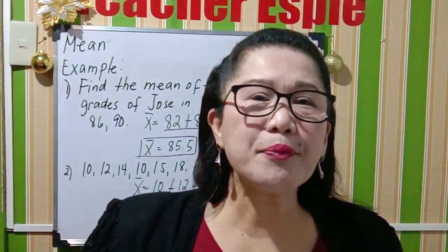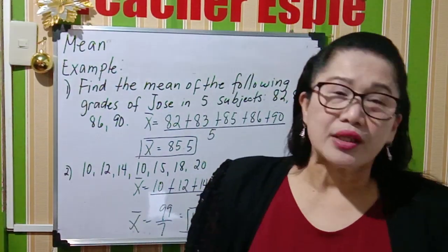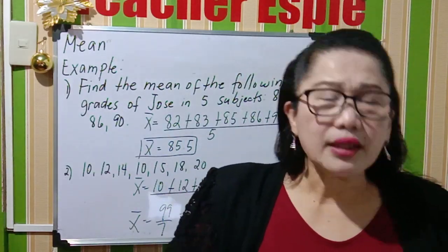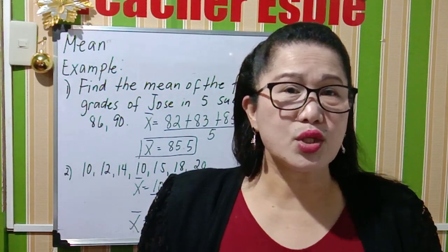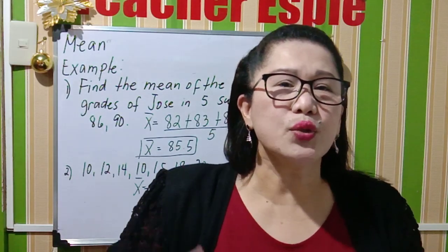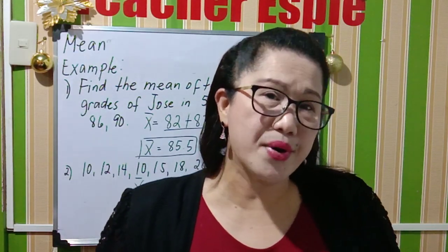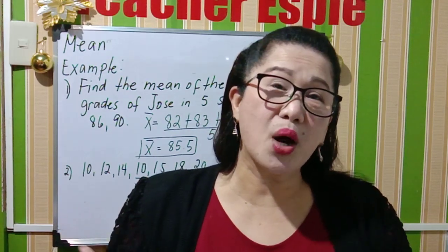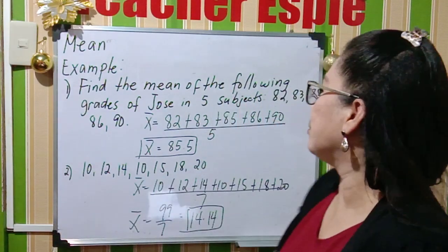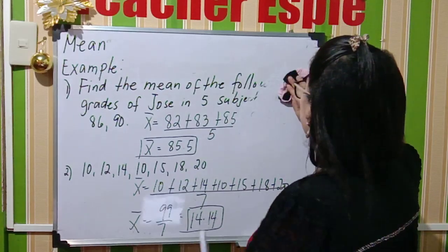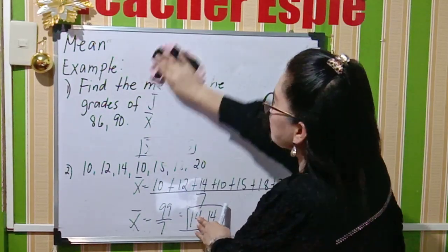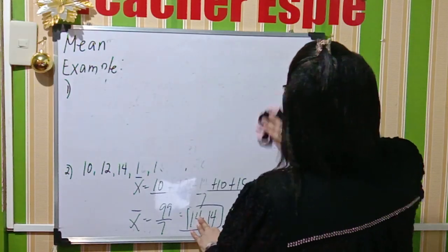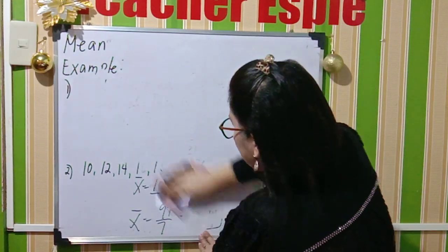Now let us proceed to the median. When we are talking about the median, this is what we call the middle value. What you need to do is arrange the numbers from the least to the greatest before getting the middle value. I will erase the board and give you an example.